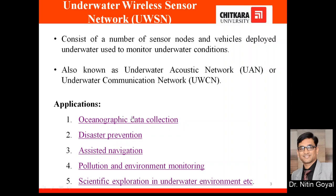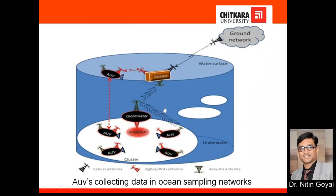There are numerous applications of UWSN. Some important applications include oceanographic data collection. As we can see in the picture, these are AUVs — Autonomous Underwater Vehicles. They collect data from the seabed, transmit it to another AUV, and through a gateway it gets transmitted to the onshore base station.